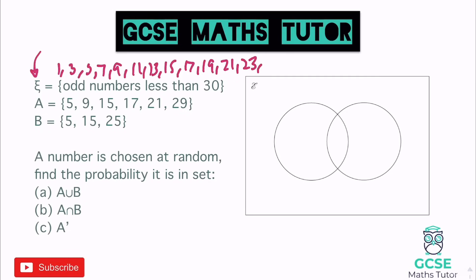These are all the numbers that are going to go in the Venn diagram, and they're only going to go in there once — no repeats. It says set A has got these numbers and set B has got these numbers. If the circles aren't labelled in the Venn diagram, just label them yourself — we'll call this A and this one B.